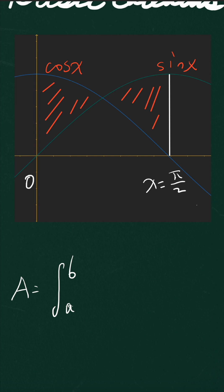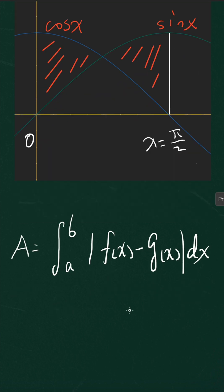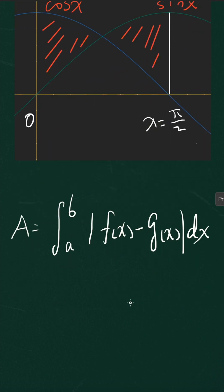So the area is equal to the integral from a to b of the absolute value of f(x) minus g(x). So now we're going to try to use this formula to solve this problem. Actually, the area A is equal to the integral from zero to pi over 2. And then we can say sine x minus cosine x, the absolute value.